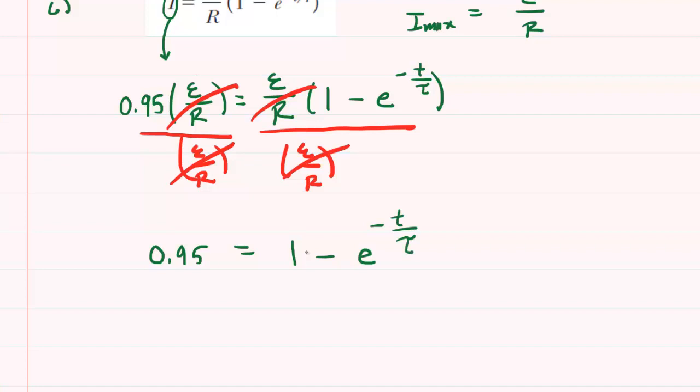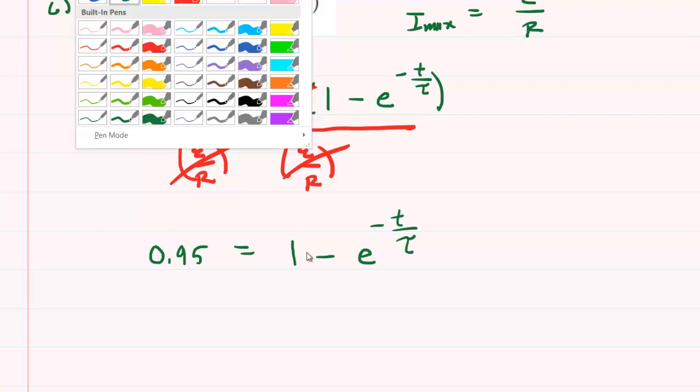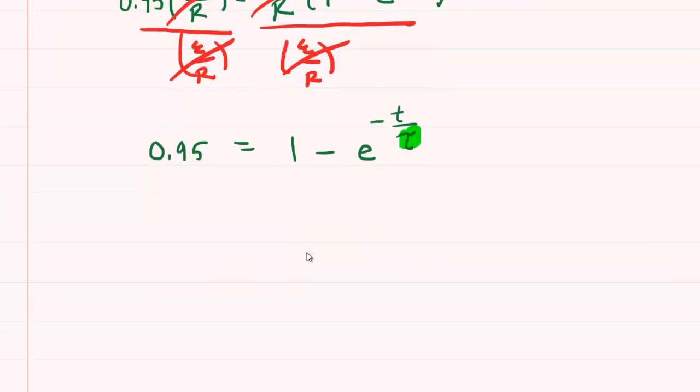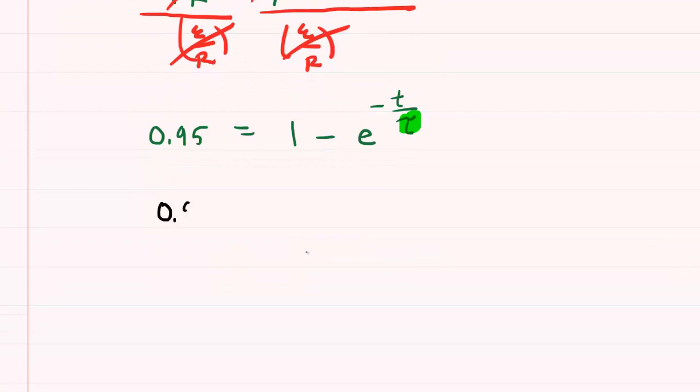Our goal is to find time. We recall that the time constant, tau, was calculated in part B. That was 2.67, so we're actually going to plug that in. Then we're going to work on solving for lowercase t, which is the time that the question is asking for. Perhaps the next best thing for us to do is to subtract 1 from both sides of this equation.